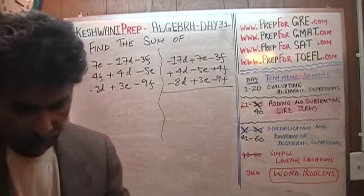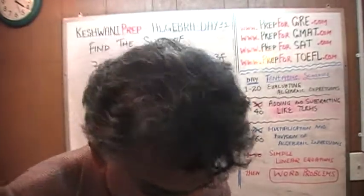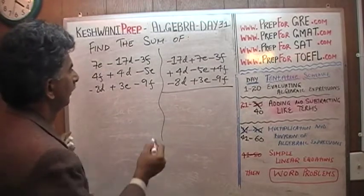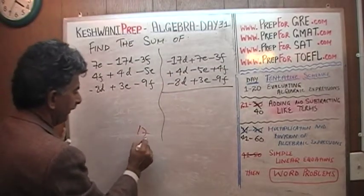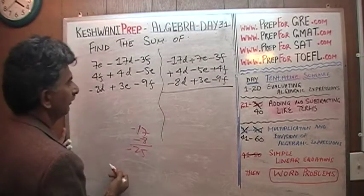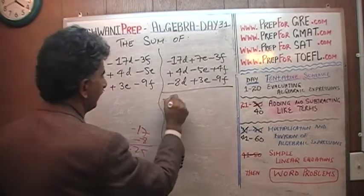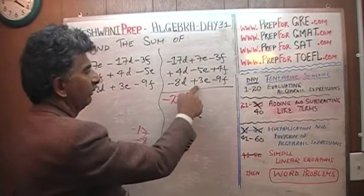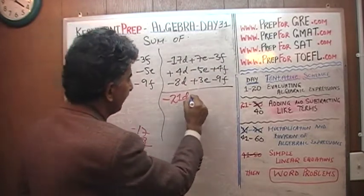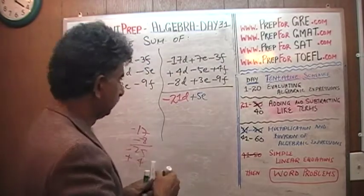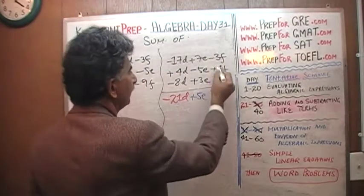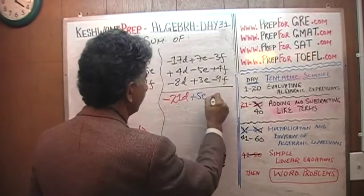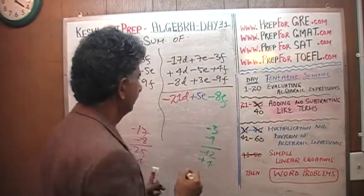Now we can add them up. For the D terms: negative 17 and negative 8 make negative 25, plus positive 4 gives us negative 21D. For the E terms: positive 7 and positive 3 is 10, minus 5 gives us positive 5E. For the F terms: negative 3 and negative 9 is negative 12, plus positive 4 gives us negative 8F. So the answer is negative 21D plus 5E minus 8F.